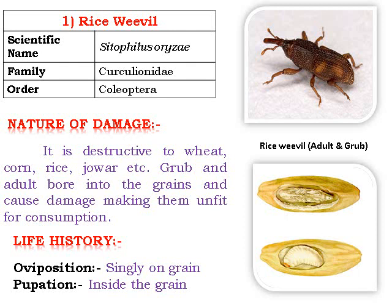Egg-laying occurs on the grain, and pupation takes place inside the grain. In the picture, you can see how the grub undergoes pupation and develops inside the grain. The adult and a close view of the rice weevil can also be observed.